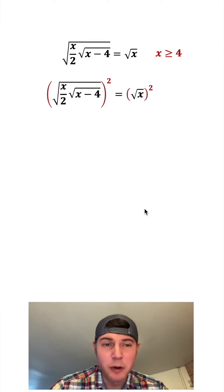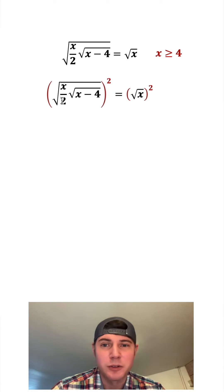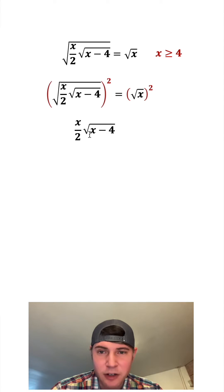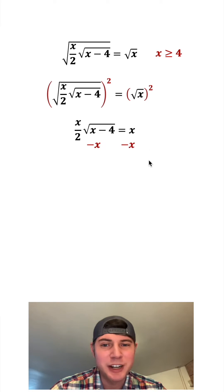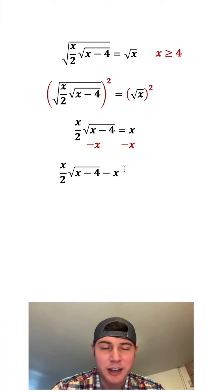So next, let's copy this down. And let's square both sides to get rid of these outer square roots. So the left-hand side is just gonna be the stuff under this outer square root, and the right-hand side is just gonna be x. Then we can subtract x from both sides. On the left-hand side, we get this minus x, and on the right-hand side, x minus x is zero.